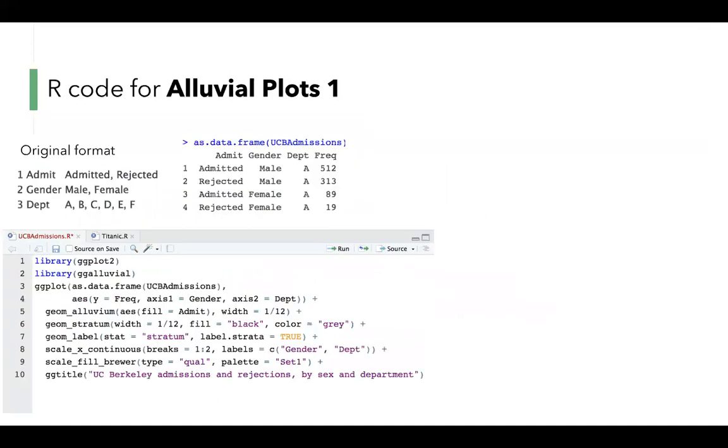Let's look at the first example. The data is about graduate school admissions at UC Berkeley for the six largest departments in 1973, classified by admission and sex. The original format is a three-dimensional array resulting from cross-tabulating 4,526 observations on three variables.